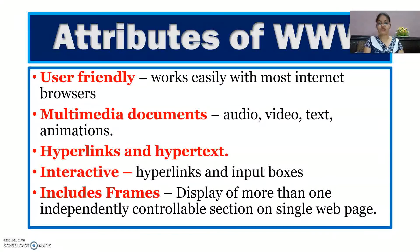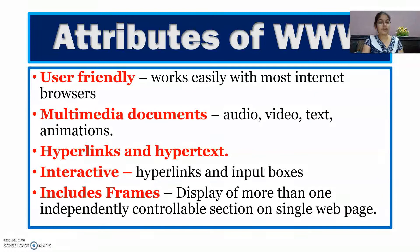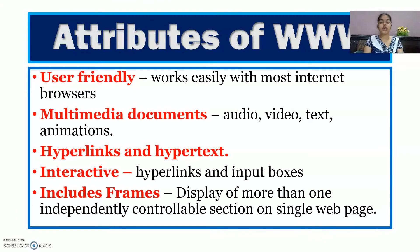These are the various attributes of WWW. First is user-friendly — you can easily access all your resources on any internet browser. Second attribute is multimedia documents — that means we have a connection of audio files, videos, text, and animation. So in WWW we also have multimedia documents. Third is hyperlinks and hypertext — hypertext is the text written on the web page, and hyperlinking means the link from one web page to another web page, or even within the same web page.